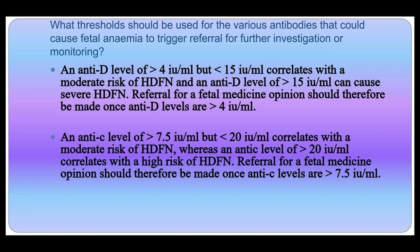Regarding the thresholds for referral: for anti-D, a level greater than 4 but less than 15 IU/mL correlates with moderate risk of hemolytic disease of the fetus and newborn, while a level greater than 15 IU/mL can cause severe hemolytic disease. Referral for fetal medicine opinion should therefore be made once anti-D level is more than 4 IU/mL. For anti-small-c, a level greater than 7.5 but less than 20 IU/mL correlates with moderate risk, while greater than 20 IU/mL correlates with high risk. Referral should be made once anti-c level is more than 7.5 IU/mL.